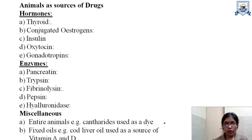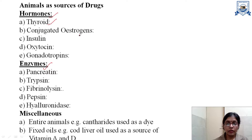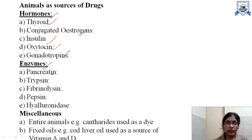Now let us have a look at how animals act as the sources of drugs. Various products are obtained from animals which act as sources of drugs, for example hormones, enzymes and some miscellaneous compounds. Hormones — for example thyroid, estrogens, insulin, oxytocin and gonadotropins. These can be given wherever the patient is suffering from a deficiency disease in which these hormones are at a much lower concentration than required. Enzymes — pancreatin, trypsin, fibrinolysin, pepsin and hyaluronidase.